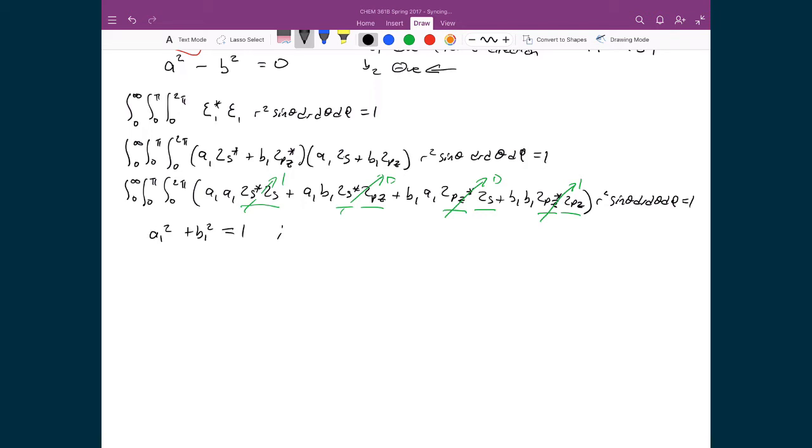Now recall that we just found out when we did the orthogonality expression above that we said that A1 is equal to B1. We saw that all four terms are going to be equal to the same. So we can actually simplify this and we can just say, well, A1 squared plus A1 squared is equal to 1.